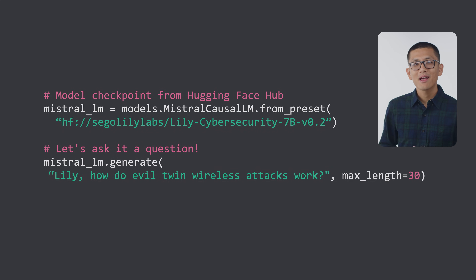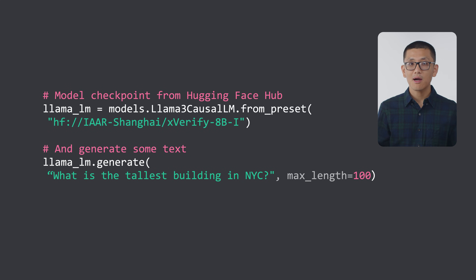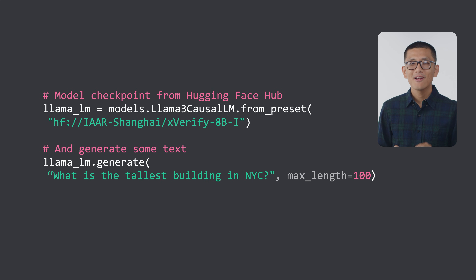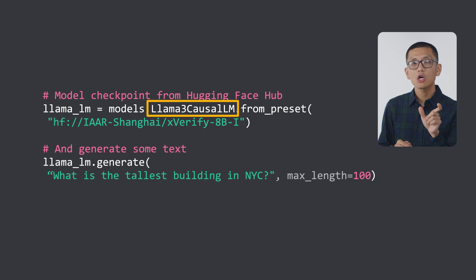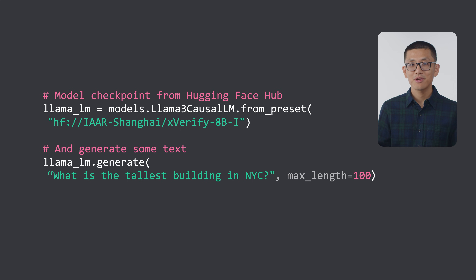Let's try another one. How about Llama 3.1, another hugely popular model. Here is a fine-tuned checkpoint on the Hub called Xverify. The process is almost exactly the same — we just swap out the class to say Llama3CausalLM. Two lines of code to run the model. Pretty amazing, right?